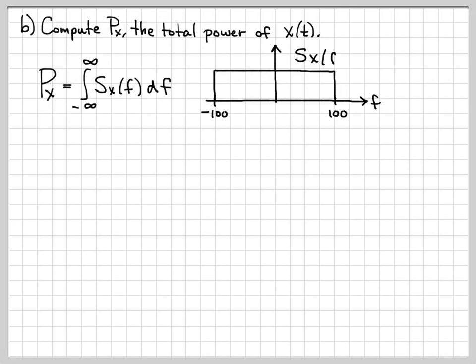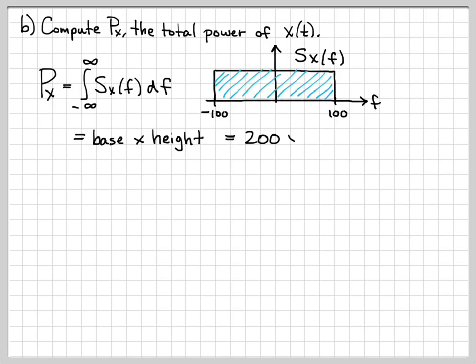For our particular problem, we have this power spectral density. So when we perform this integral, we're really just adding up all the area under the curve of the power spectral density, which is the shaded blue region. Adding up area turns into computing the area of a rectangle, which is the base times the height. The base is 200, the height is 1, so we have a power of 200 as the total power of our signal x(t).